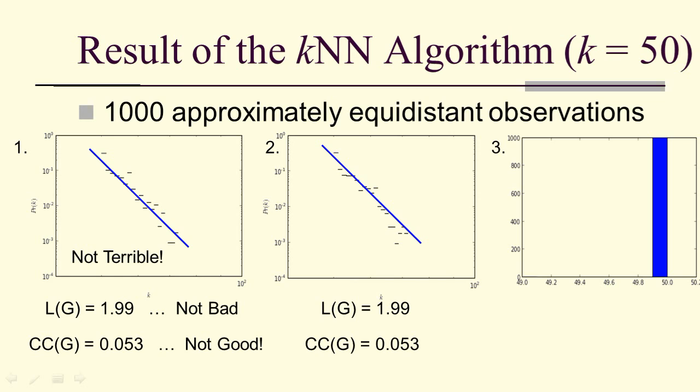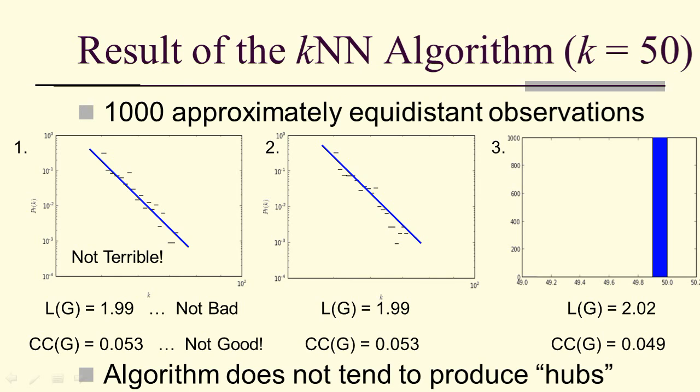What about the AND option? Notice this is where both vertices have to be below K, in this case below 50, before you add an edge. Notice that means most of the vertices fill up to the degree 50 upper bound. The path length is actually a little bit longer, and again, not very good clustering. In fact, in general, the K nearest neighbor's algorithm doesn't tend to produce hubs.